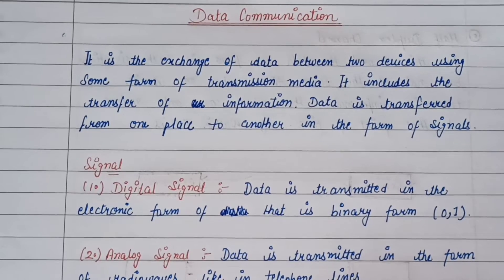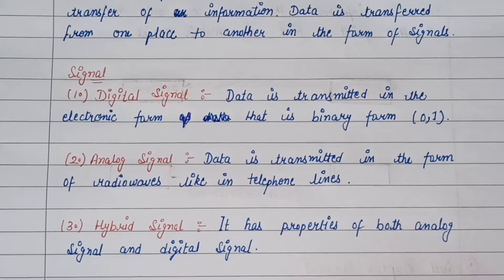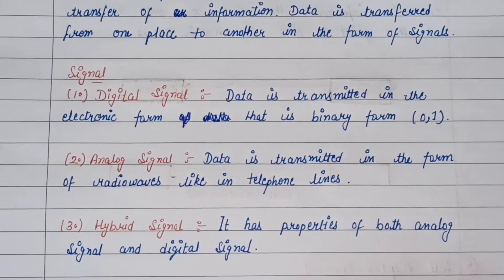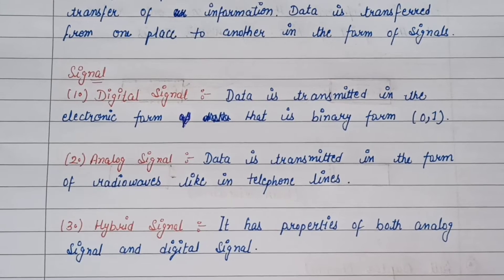Signals are transferred from one place. Now let's see the types of signal. Signals are three types: first is digital signal, second is analog signal, and third is hybrid signal.